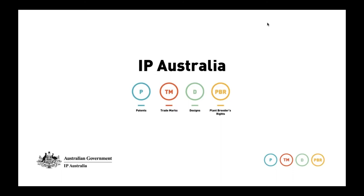I'd like to introduce you to today's presenter, Andrew Hallinan. Andrew has been a PBR examiner for five and a half years and has been working in horticulture since the early 90s, working across most areas of amenity horticulture and some production horticulture in Australia and the US. When you submit the Plant Breeders Rights application to IP Australia, the Plant Breeders Rights Examiners are the people who look at your application and consider whether it meets requirements for registration under the Plant Breeders Rights Act.